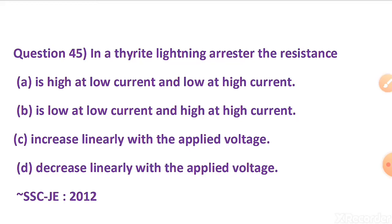In a thyrite lightning arrester, the resistance — option A: is high at low current and low at high current. Option B: is low at low current and high at high current. Option C: increases linearly with the applied voltage. Option D: decreases linearly with the applied voltage.